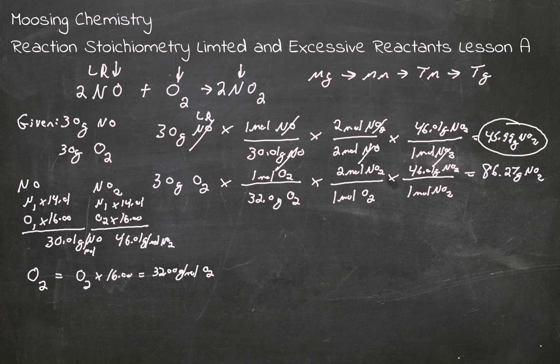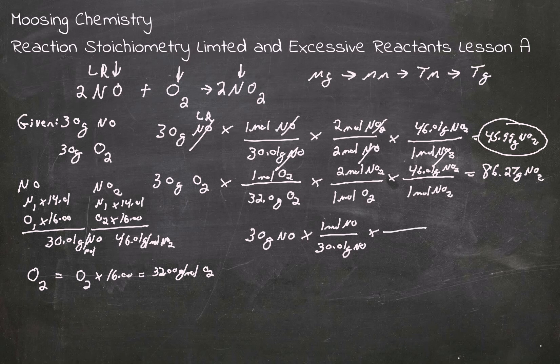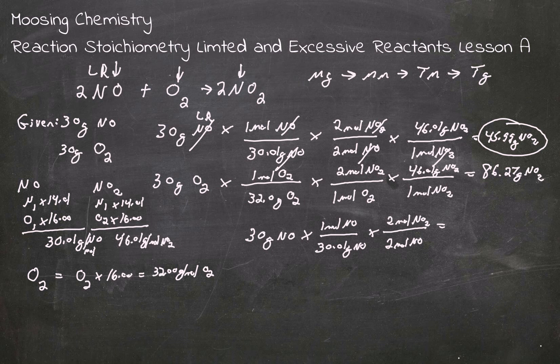So what we're going to do is we're going to go 30 grams of NO times 1 mole of NO divided by 30.01 grams of NO times – and we want to know how many moles of NO2 it makes. So there are 2 moles of NO2, 2 moles of NO.